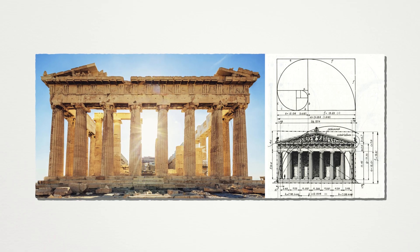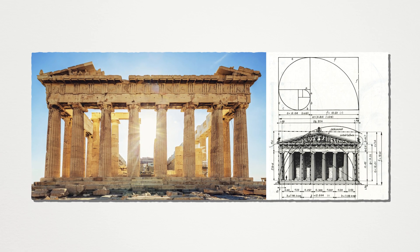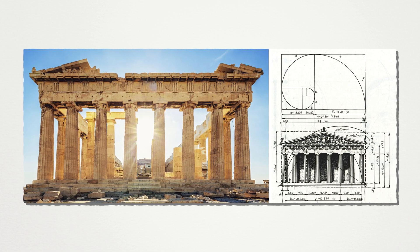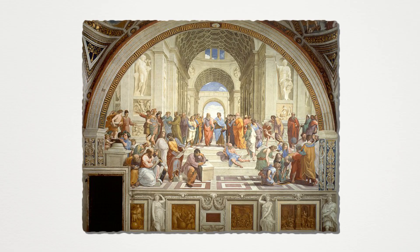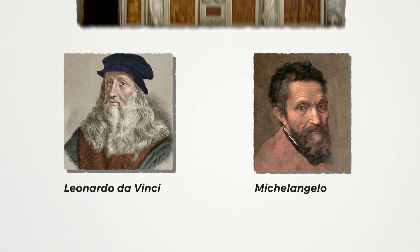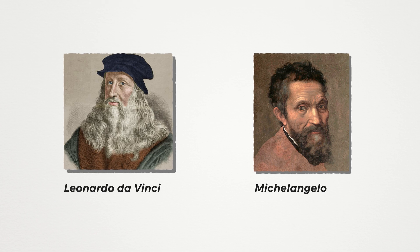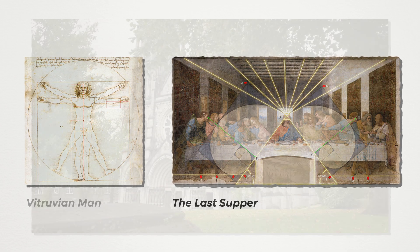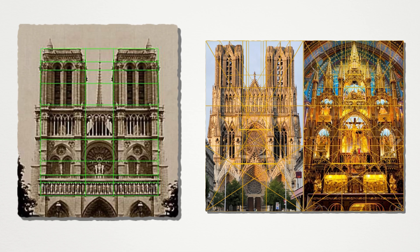For centuries, the Golden Ratio has been integral to architecture and art. Ancient Greek architects are believed to have used it in the Parthenon, designing its façade and column spacing to reflect these proportions, which they associated with perfection. During the Renaissance, artists like Leonardo da Vinci and Michelangelo embraced the Golden Ratio to enhance visual harmony. Da Vinci's Vitruvian Man and The Last Supper are said to incorporate golden rectangles and spirals. In Gothic cathedrals like Notre Dame, golden rectangles helped organize structural elements like windows and doorways, creating visually balanced design.